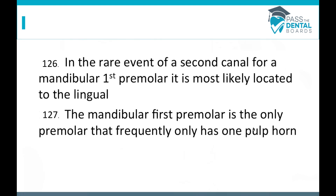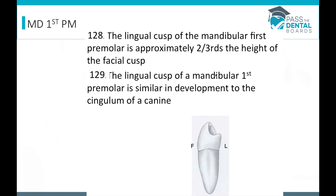In the rare event there's a second canal for the mandibular first premolar, it's usually located to the lingual. The mandibular first premolar is the only premolar that frequently has one pulp horn. The lingual cusp is about two-thirds the height of the facial cusp, and the lingual cusp of the mandibular first premolar is similar in development to the cingulum of a canine.